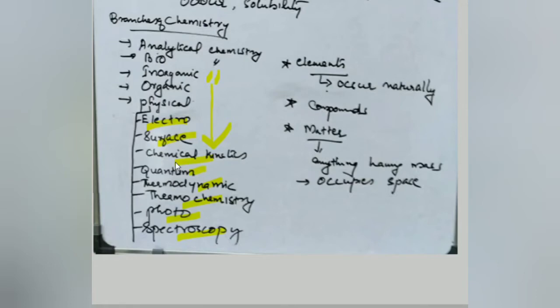When we start to learn chemistry, the basic concepts we should know are: elements — substances which occur naturally, such as hydrogen and oxygen, which we get directly from the atmosphere; compounds — when elements combine in a fixed proportion we get compounds; and matter — everything in the universe that has mass and occupies space comes under matter, such as a pen, pencil, table, bottle, or laptop.